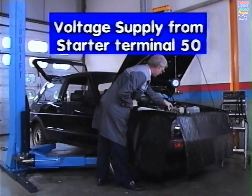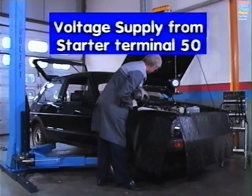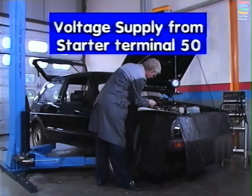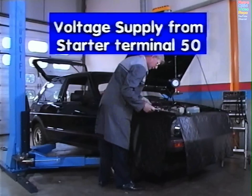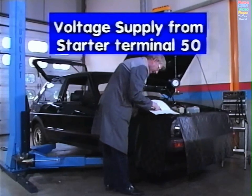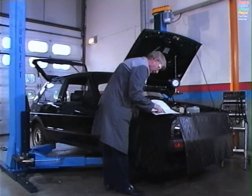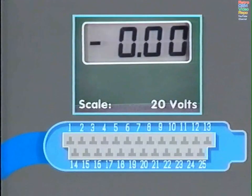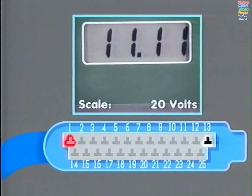Voltage supply from starter terminal 50. This informs the control box to energize the fuel pump relay whilst cranking. When the vehicle has started, the fuel pump is energized as normal by pulses from the hall sender. Make sure the vehicle is in neutral and the handbrake on. With a positive lead in terminal 1 and the negative in terminal 13, operate the starter. A minimum of 8 volts should be present. If not, check the battery condition and the connection on the starter and the ignition switch.